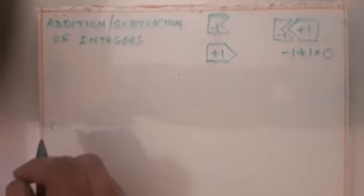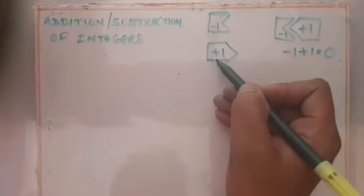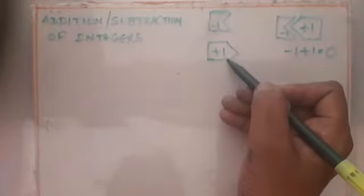Hello friends, let us recall addition and subtraction of integers. Here I have drawn two symbols: this type of symbol represents minus 1, and this type of symbol represents plus 1. So when these two symbols get interlocked, as you can see in the figure, it means minus 1 plus 1 equals 0.